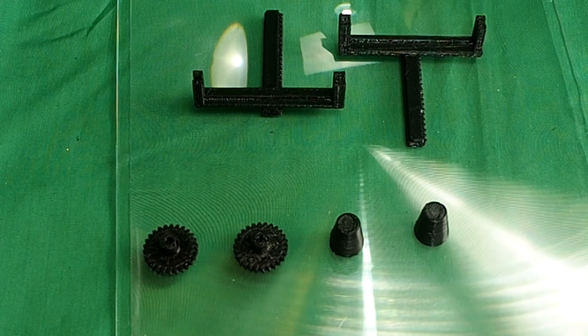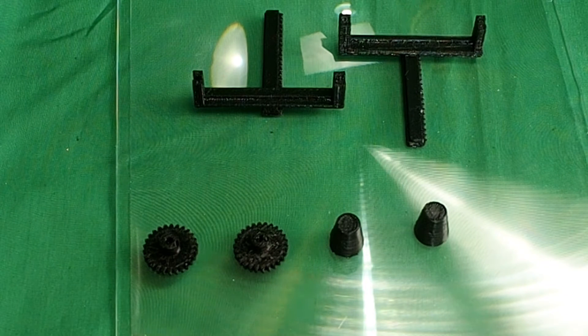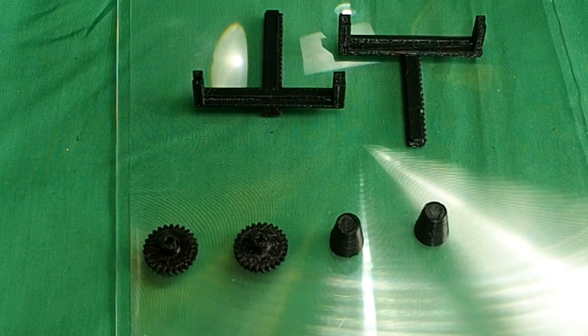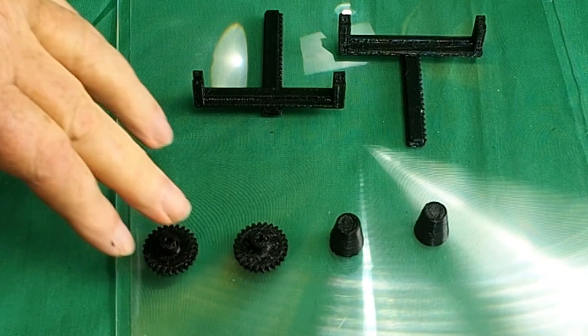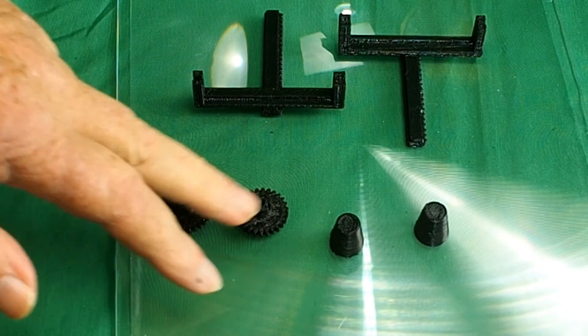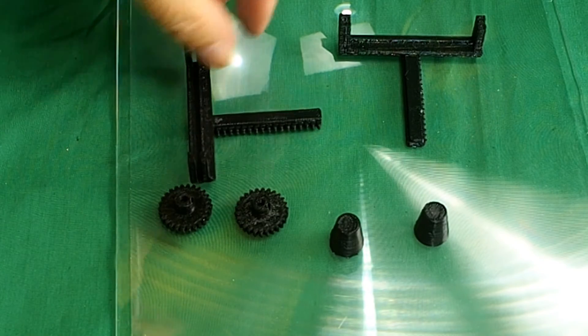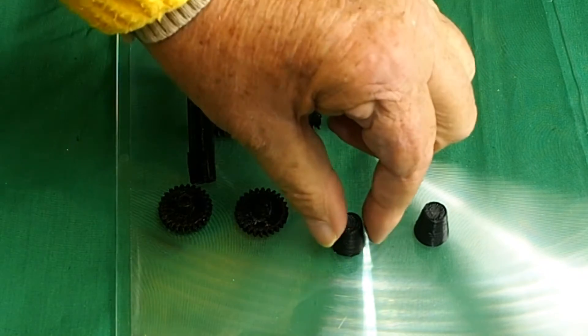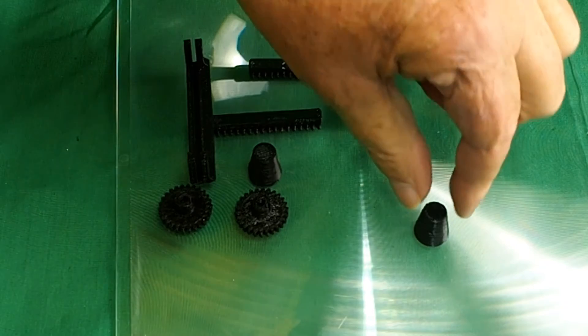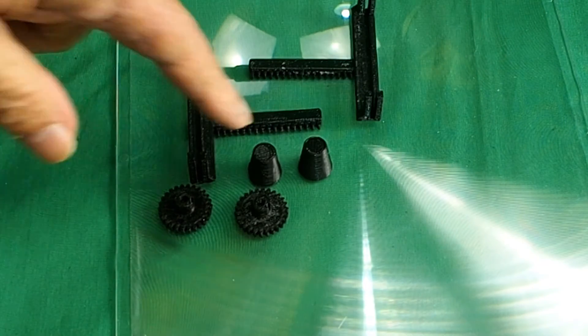The first thing to assemble is the rack and pinion focusing assembly. So these are the parts that you need. Print out two of the cogs, two of the racks, and two focusing knobs.